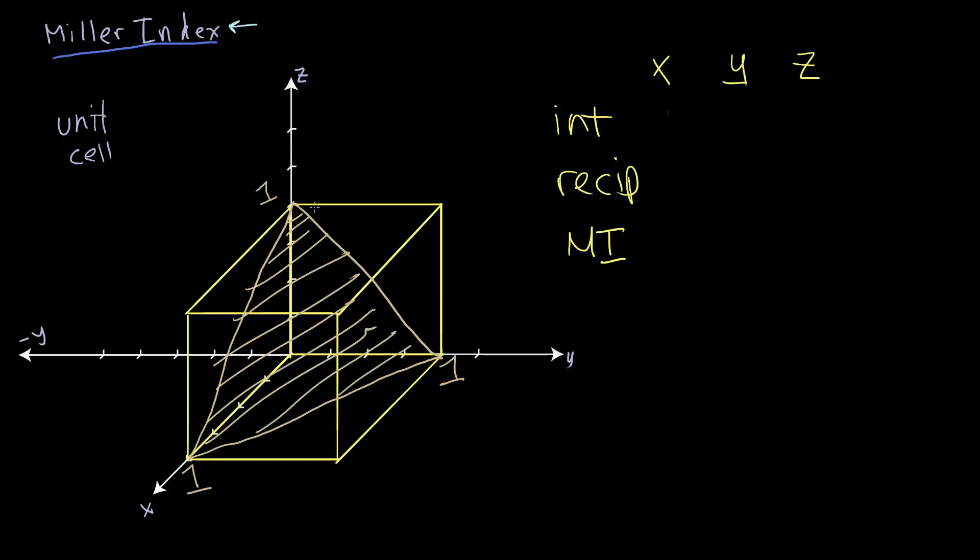And we can immediately see why we want to use Miller indices here. What would we call this face without Miller indices? We could call it the diagonal face, but that would not be very descriptive.